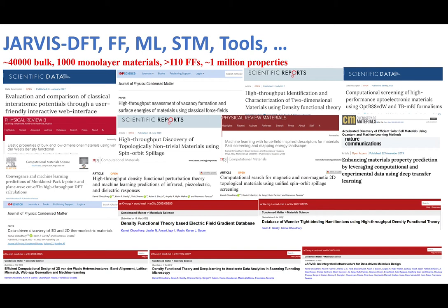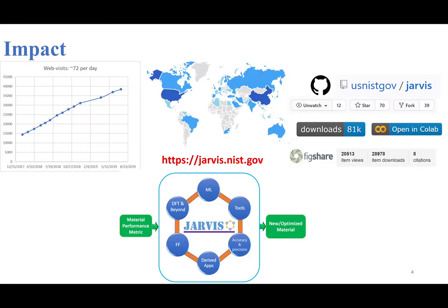You can see that in the last 3-4 years, we have published several papers. Today specifically, I'll be talking about the 2D topological material paper. JARVIS has been used throughout the globe, especially in the US and China, based on this Google Analytics view. The website for JARVIS is jarvis.nist.gov. The tools for this work are available at usnistgov/jarvis.